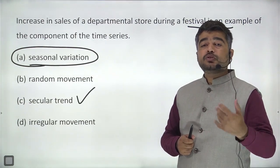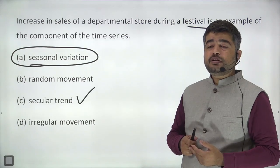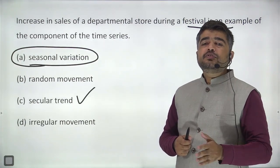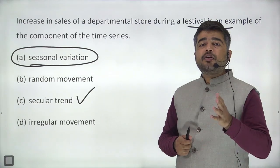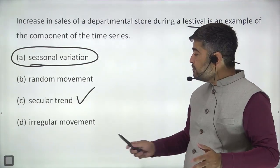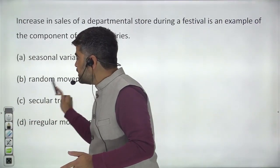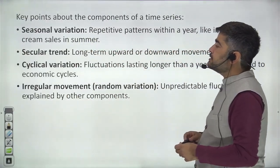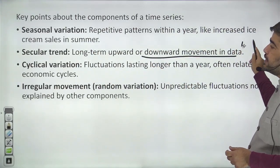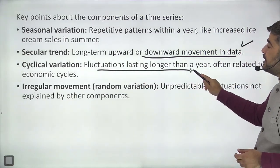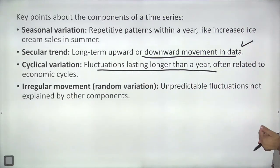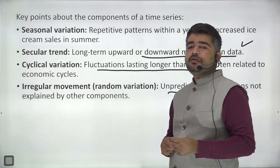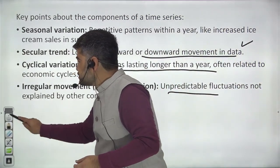Secular trend or long-term trend has a time period of more than one year — it is a long-term upward or downward movement in data. Cyclic variation refers to fluctuations lasting longer than one year. Irregular variation is random and unpredictable fluctuation. These are the different kinds of time series components: seasonal variation, secular trend, cyclic variation, and irregular variation.